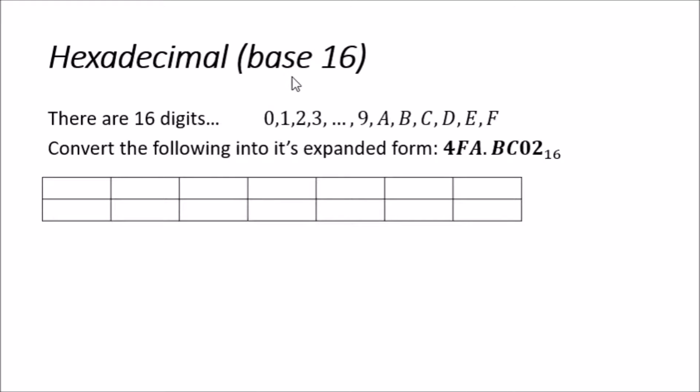Firstly, if you're unsure, hexadecimal is a base 16 system where there are actually 16 digits going from the natural numbers 0, 1, 2, 3, up to 9, and...